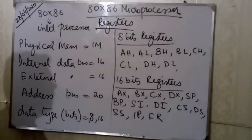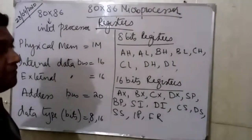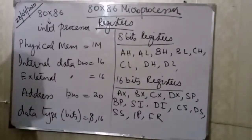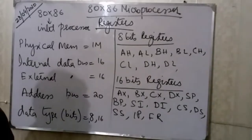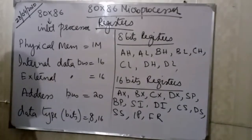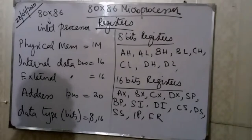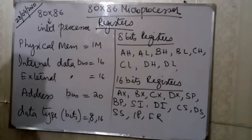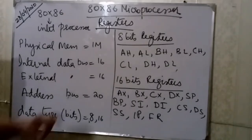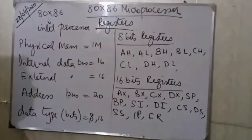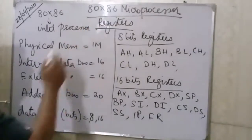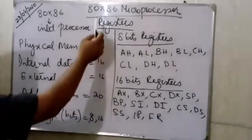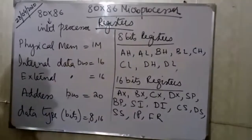Assalamualaikum. Today we are going to talk about microprocessor and assembly language programming. This is the initial area of assembly language programming. First of all, you need to see the processor and assembly language. We are going to use the processor 8086 for microprocessor — the Intel range processor.